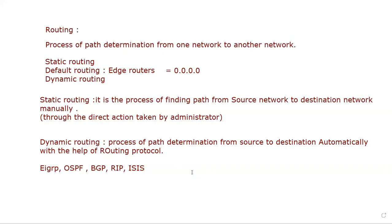So routing is a process of path determination. We have three types: static, default, and dynamic. In static routing we find the path from source to destination manually, but in dynamic routing it is found automatically with the help of routing protocols. I am going to stop this video here and start the practical of static routing in the next video. Thank you.